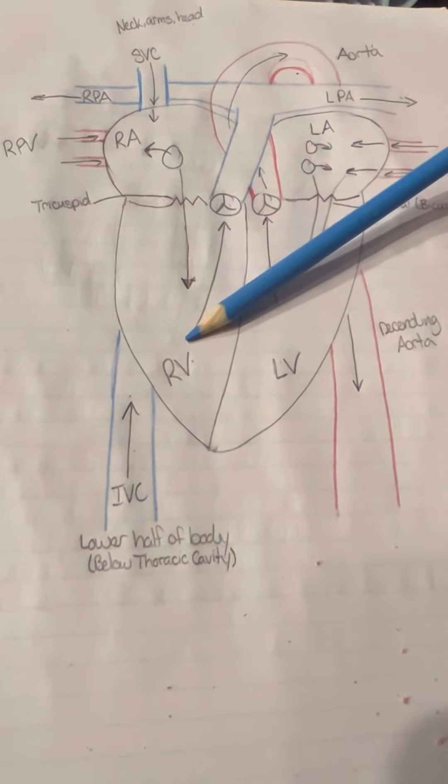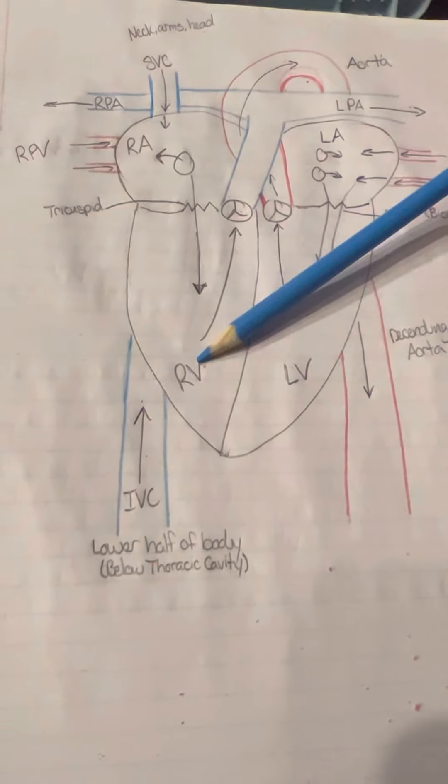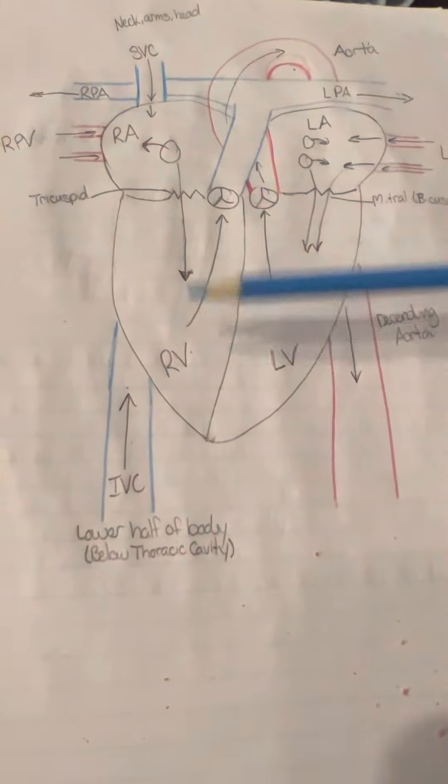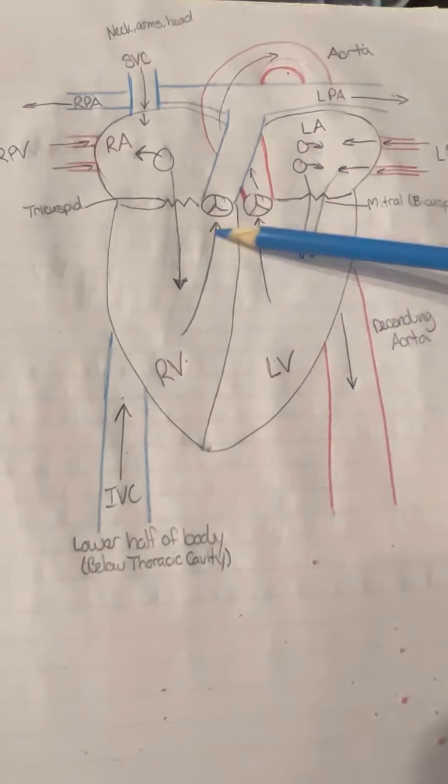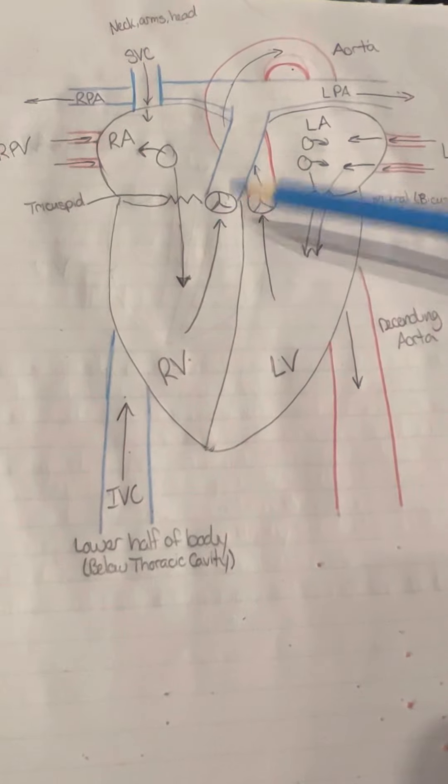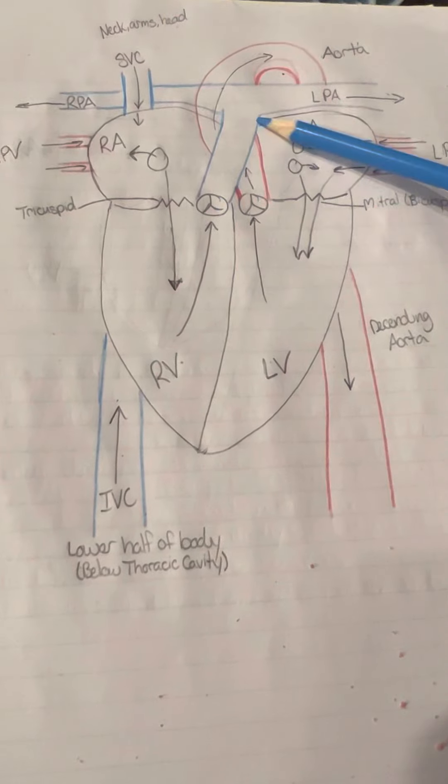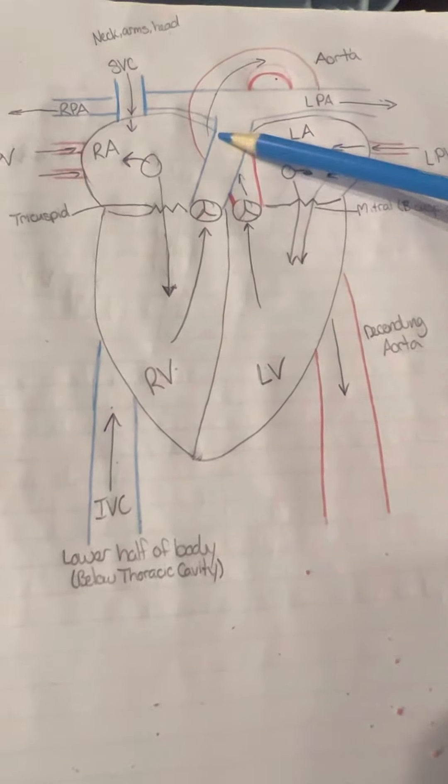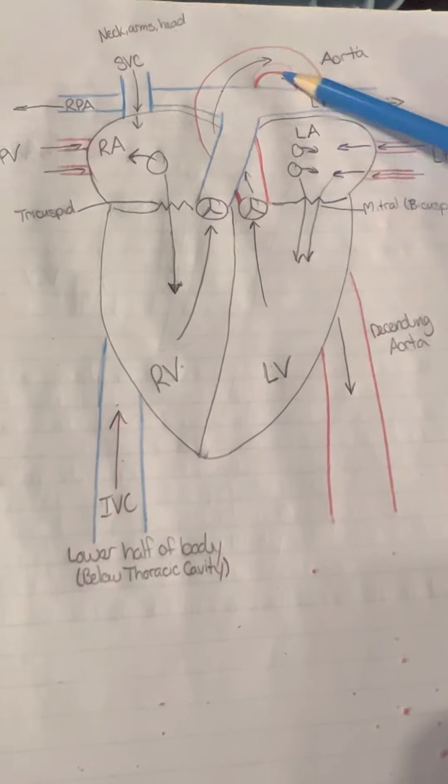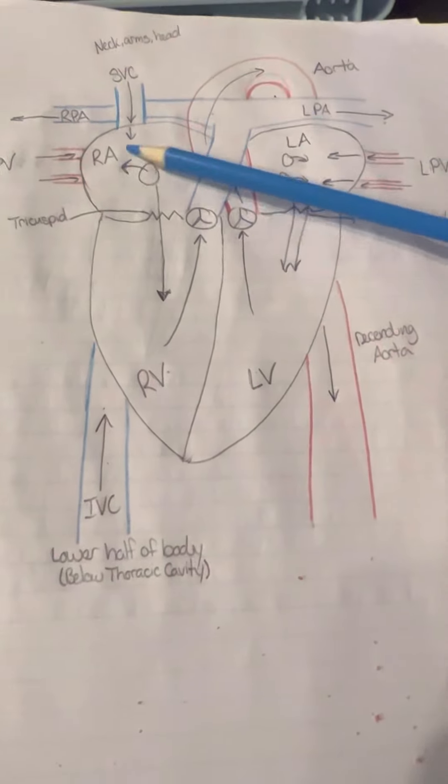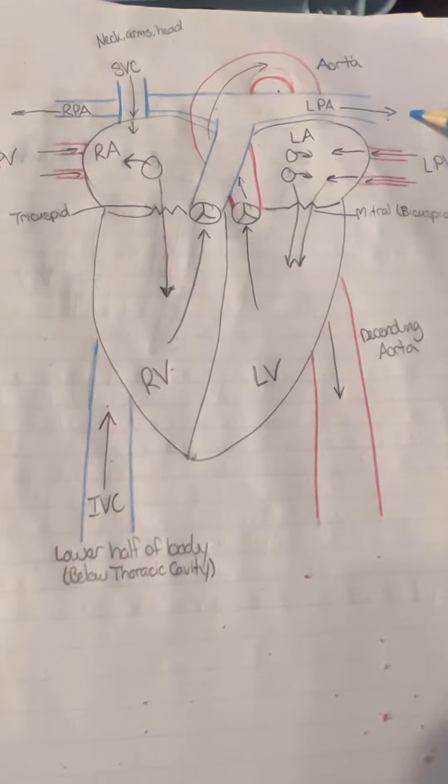The right ventricle then fills up and once the ventricle contracts, it pushes blood through the pulmonary semilunar valve and into the pulmonary trunk, which will then lead to the right pulmonary artery and the left pulmonary artery.